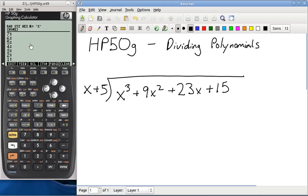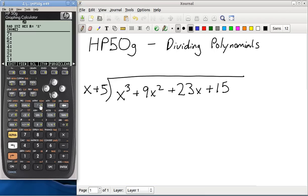From the main home screen on the calculator, you're going to want to go to the equation writer, which is this orange EQW right here. Press the right shift, equation writer, and that brings you up. You've got a blank screen with a little pointer there.